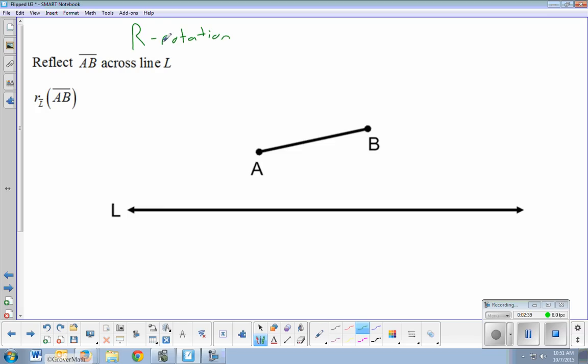A capital R is our notation for rotations. Lowercase r is the notation we use for reflection. So you're going to see both of those symbols. When you see a capital R means rotate. Lowercase r means reflect.